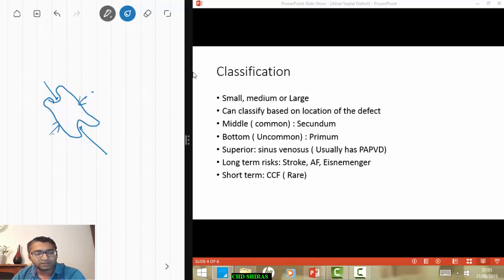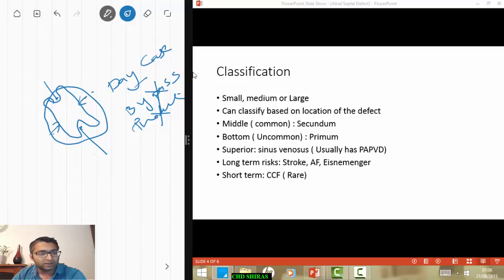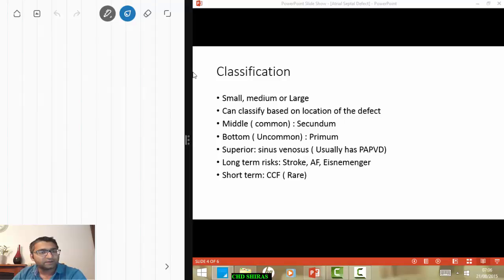So if you have adequate rims on all four ends, then a device closure is the way forward. It's a day case, usually done as a day case. They don't need to go on bypass machine, they don't need a big thoracotomy like they would need in a surgical repair. But you can't often do it because obviously the rims are often inadequate. You can't do it if the defect is a primum defect. You can't do it if the defect is a sinus venosus defect.